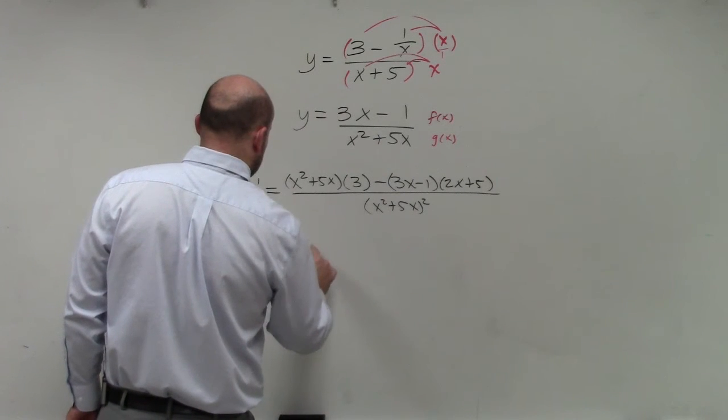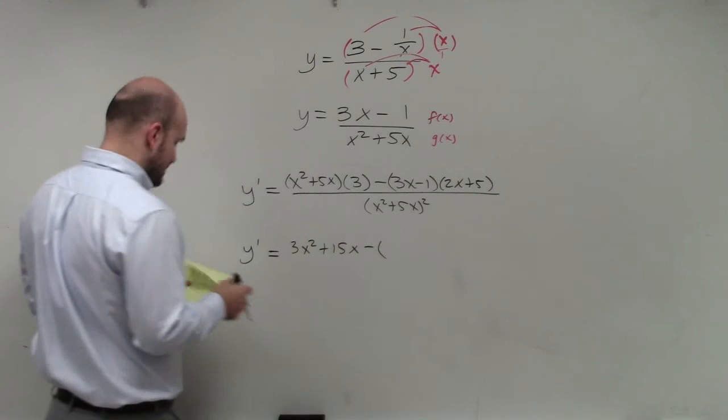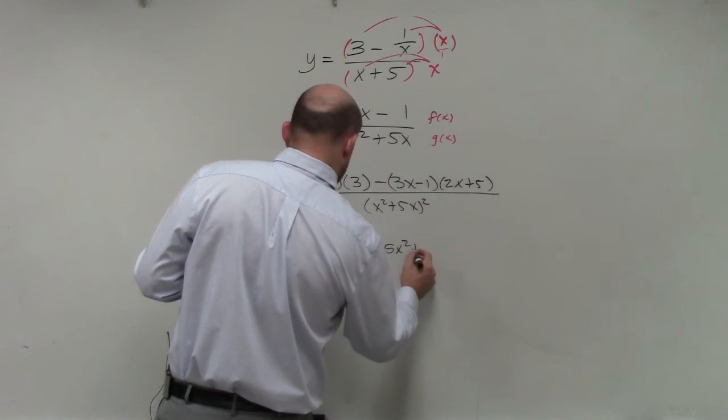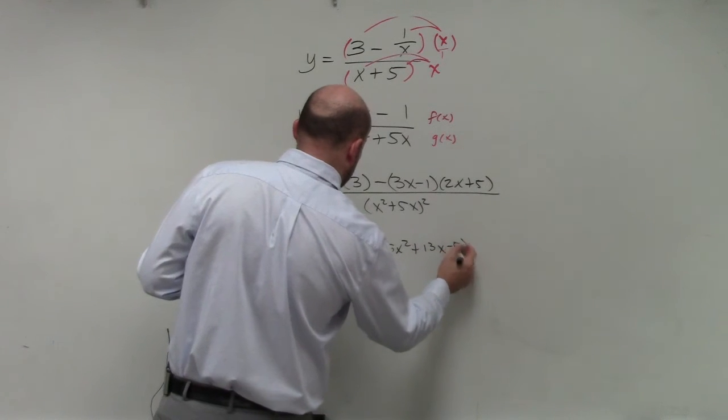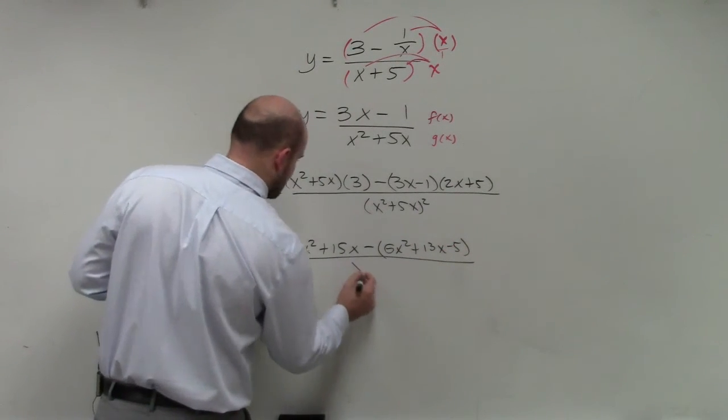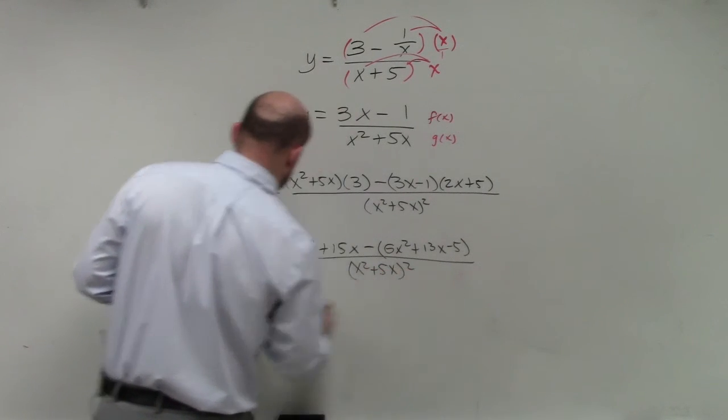So therefore, we basically have 3x squared plus 15x minus, what did that binomial? 6x squared plus 13x minus 5. And we'll give that to, we'll just leave that x squared plus 5x squared.